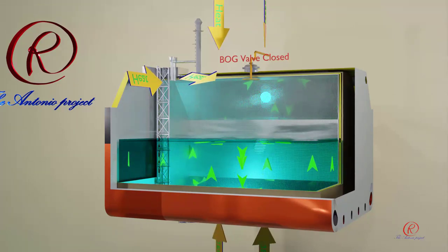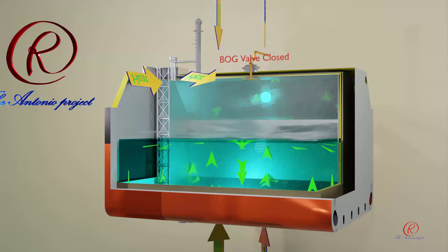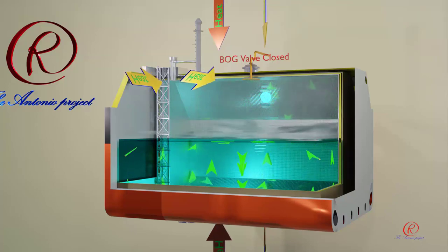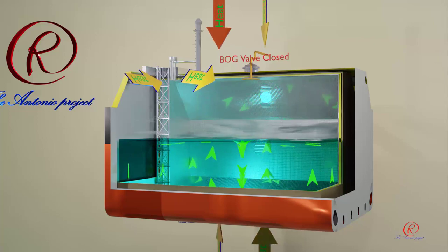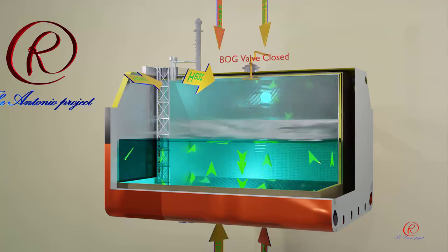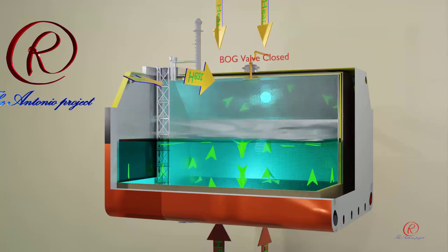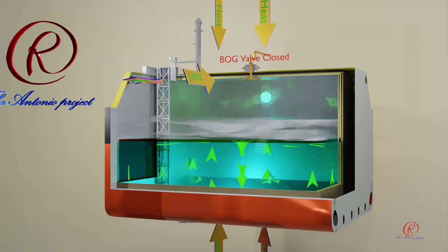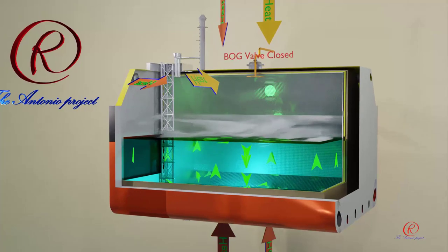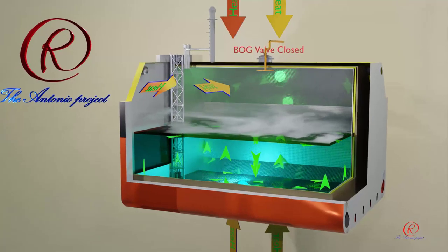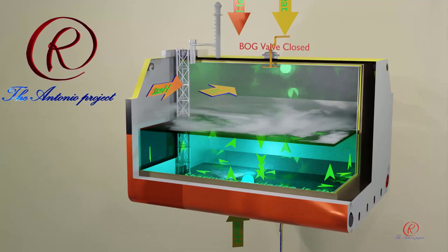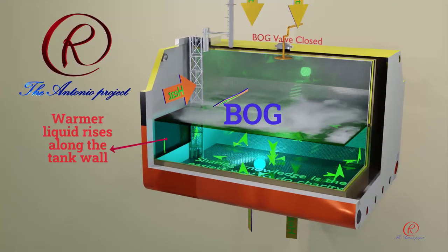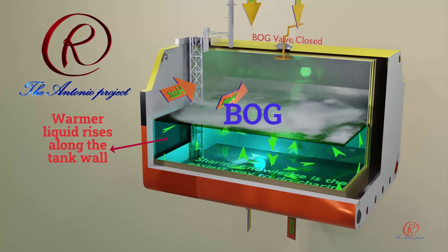During normal operation, boil-off gas or BOG is consumed by boilers, DFDE, or ECU, and tank pressure is maintained. However, if a cargo tank is sealed, tank pressure will rise about 5 to 10 kilopascals within 30 minutes. This rapid pressure increment is caused by the stratification process.